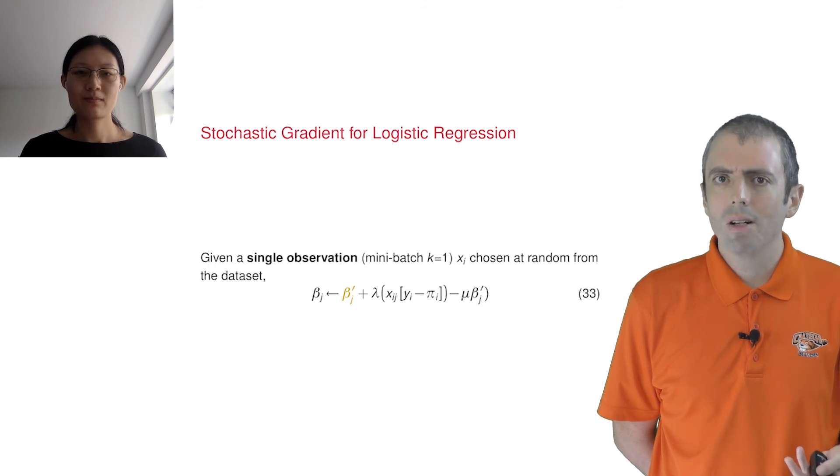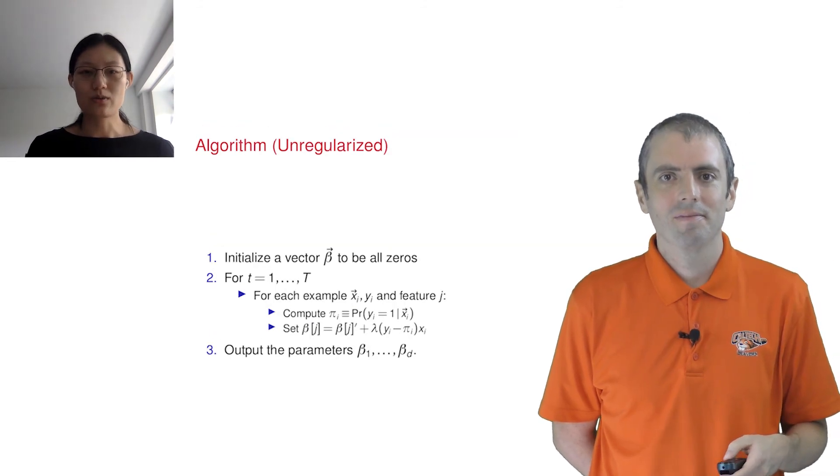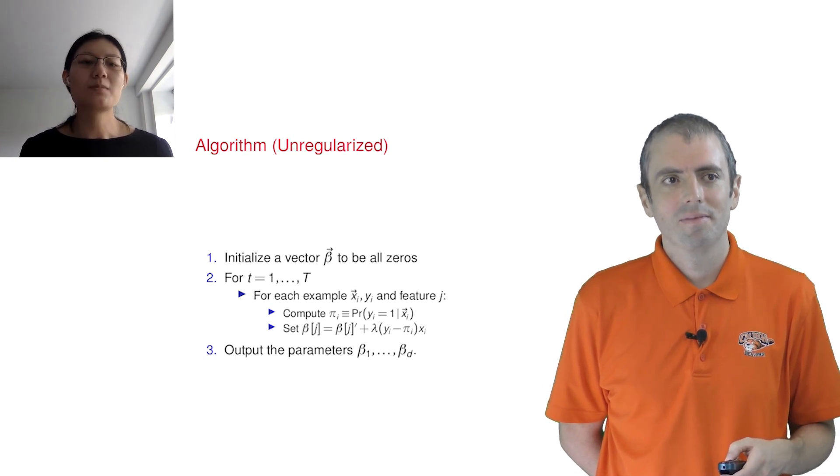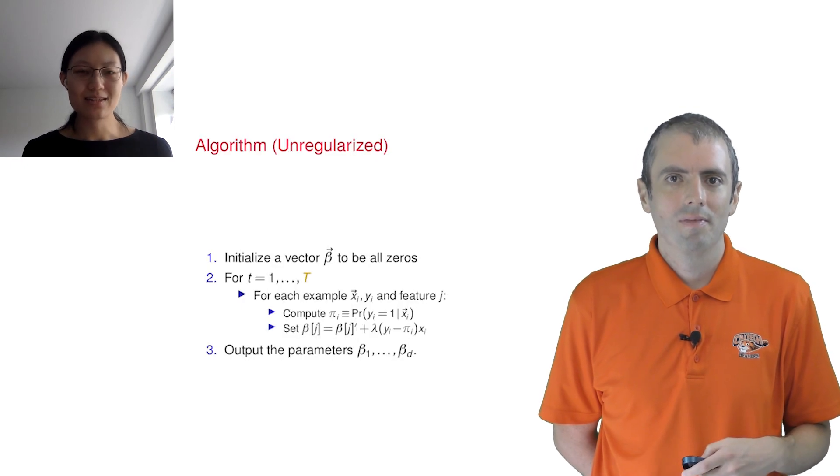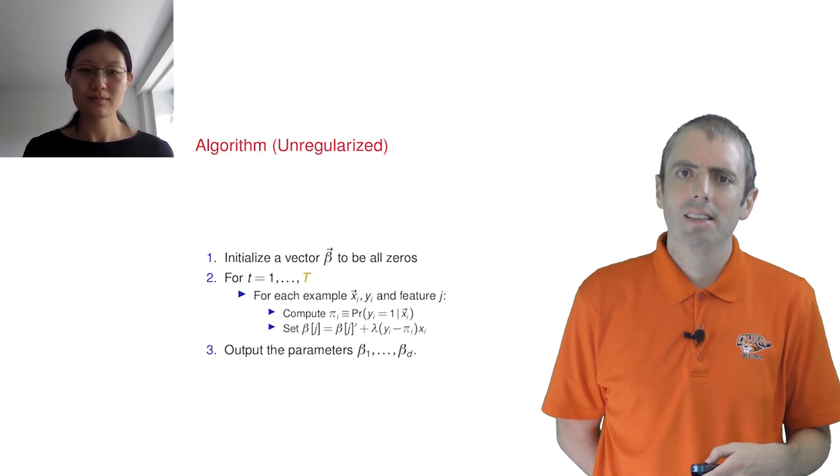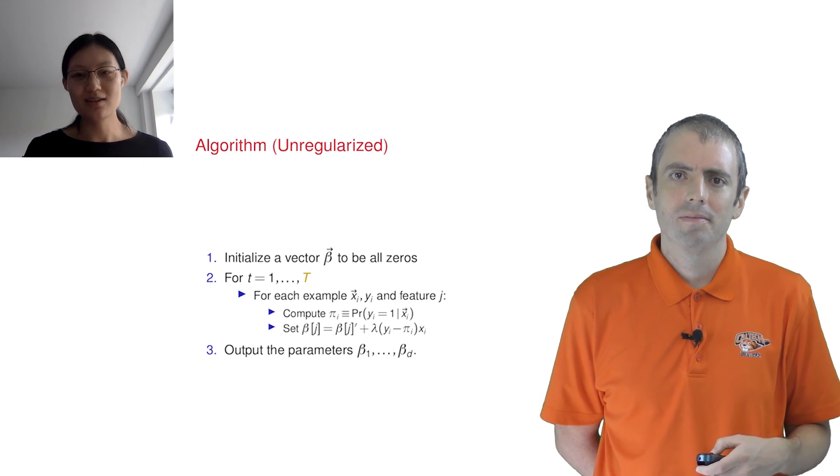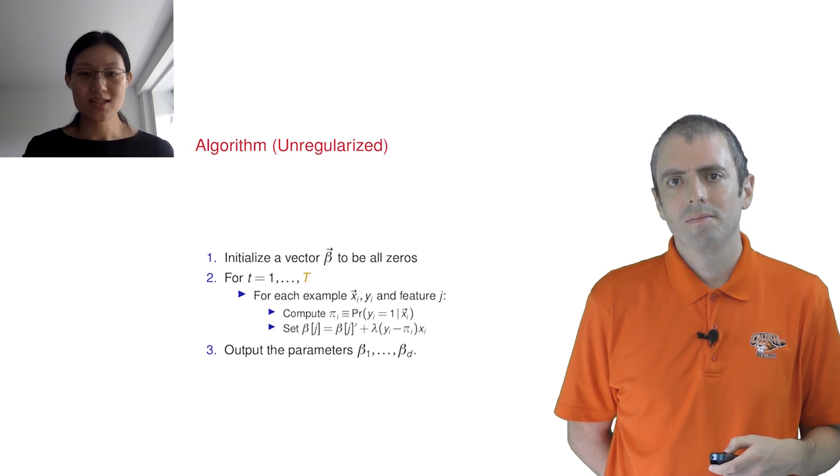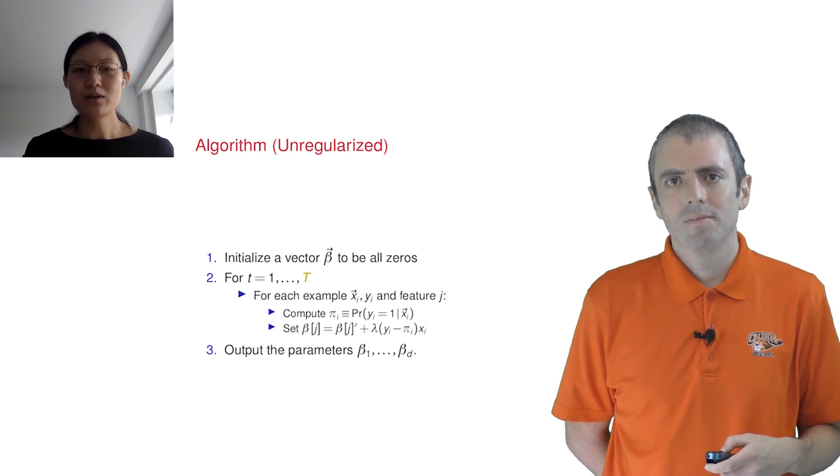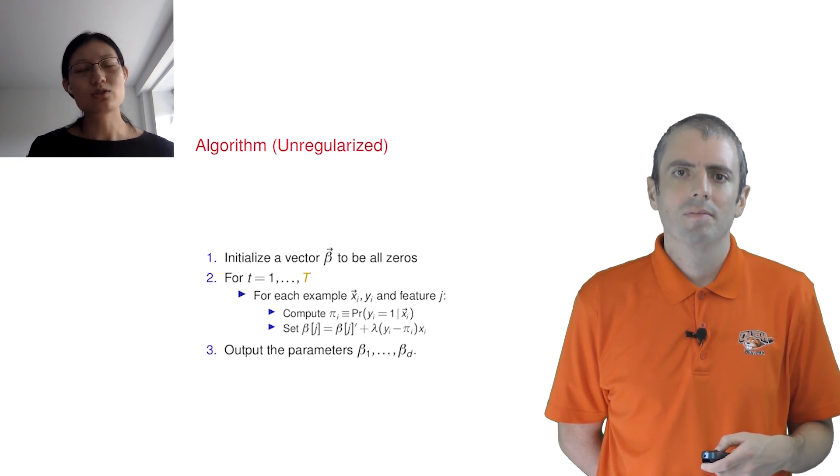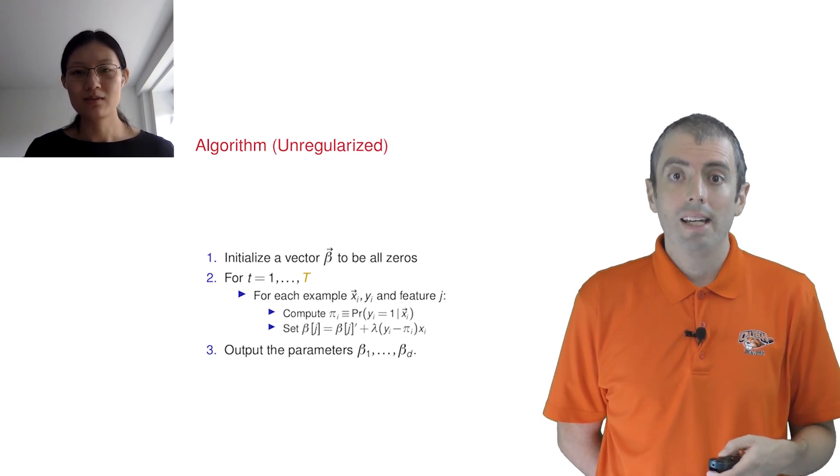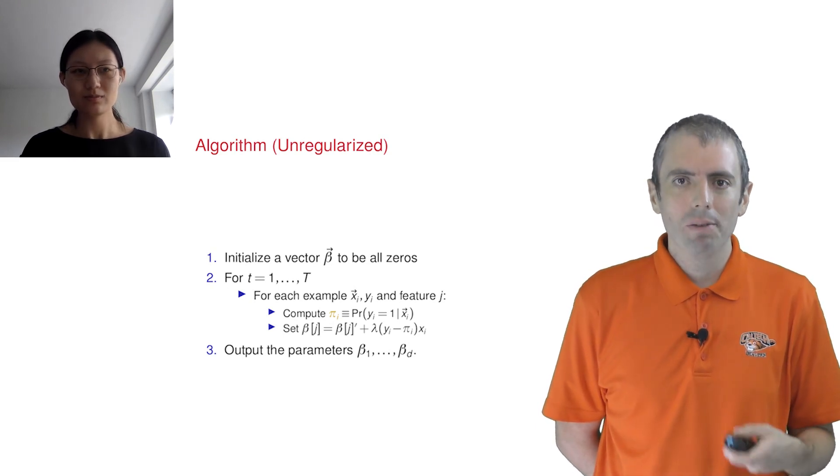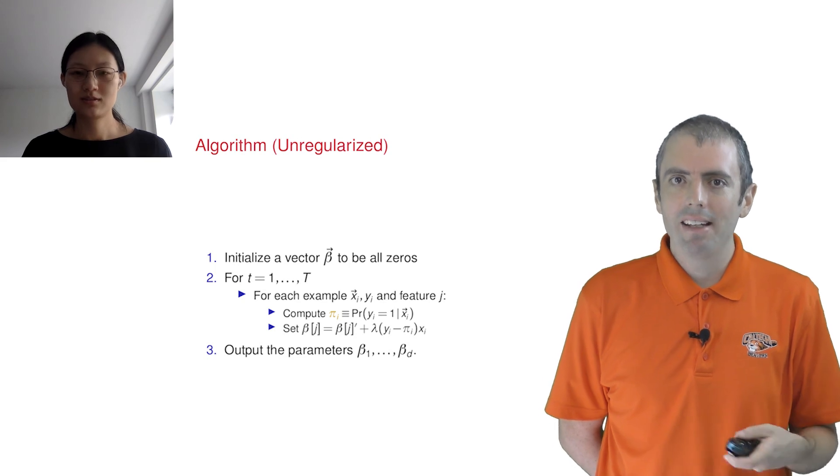What would this look like in terms of an algorithm? Let's see this in pseudocode for the unregularized version. We first initialize our weights to all be zero, and then for time one until t. How do you set t? It depends on how big your dataset is and how complicated your model is. We usually set it much larger than you need, and keep an eye on your objective. If your objective stops changing, then it's usually good enough. Okay, and then we pick an example, figure out what our prediction would be for that example, multiply that by the feature value, and then add it to the weight vector.